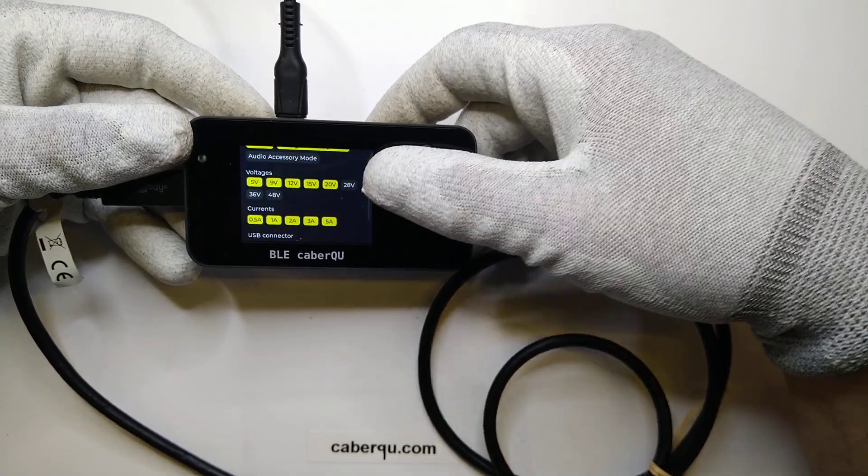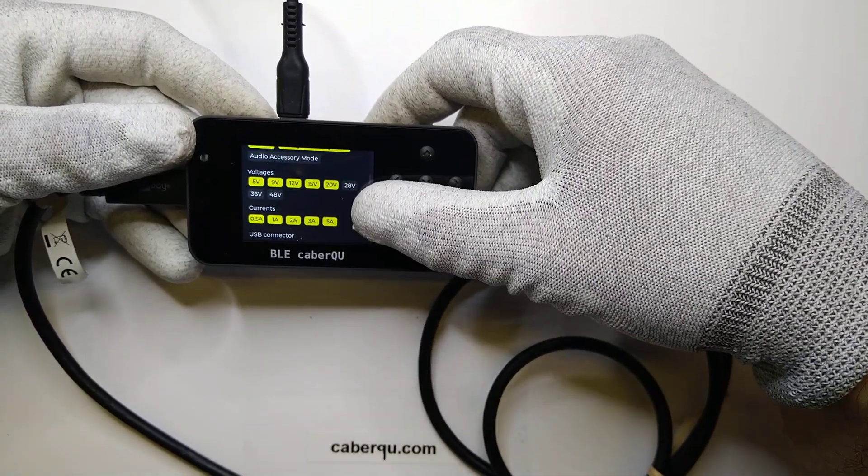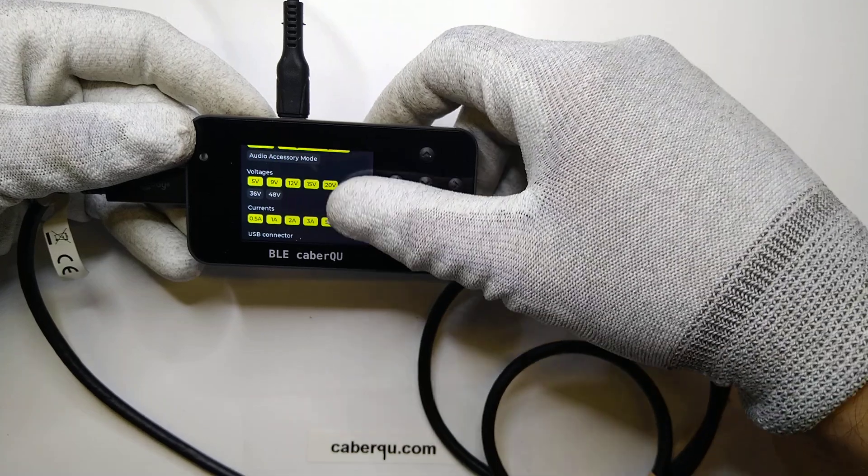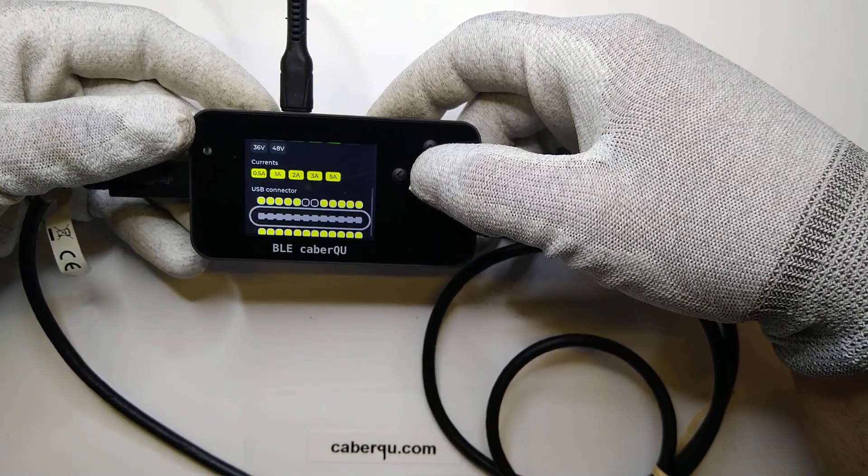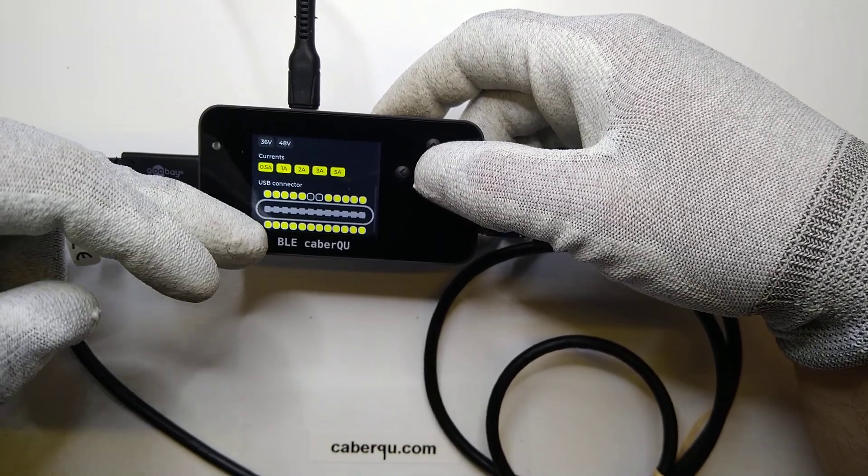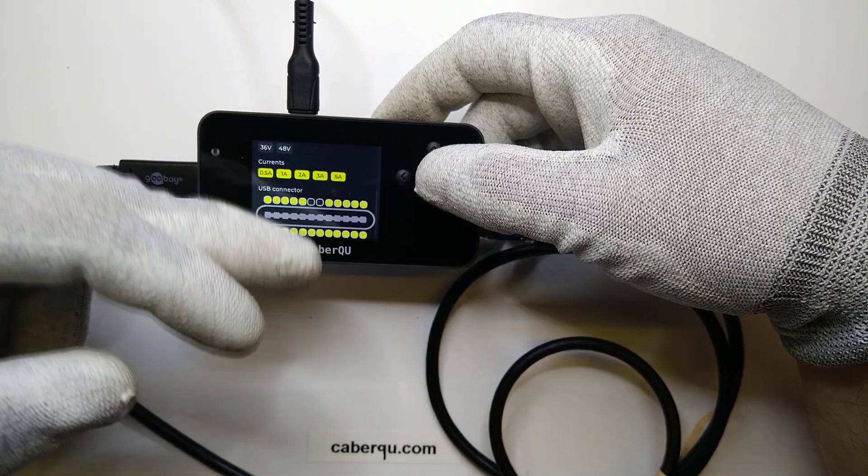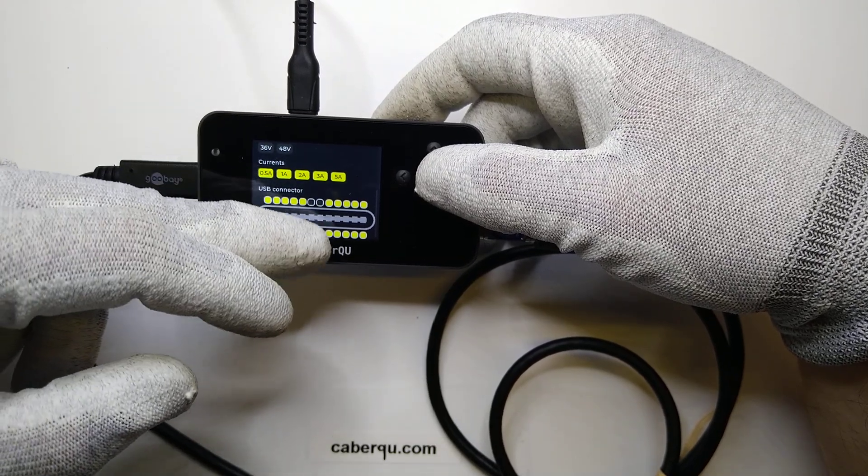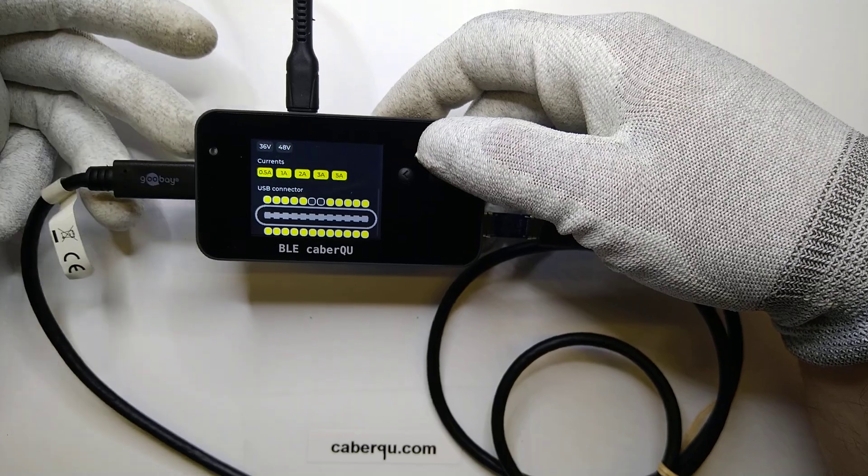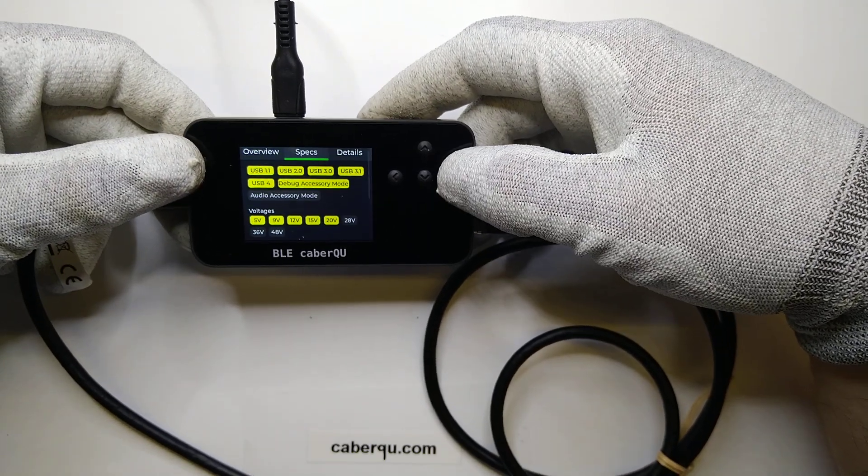And if we take a look, we can see that it advertised itself as a 20-volts, 5-amps cable, and basically all of the connections are made. The only two that are not made are the data plus and data minus on the top side. That's for backwards compatibility, as always, to be able to connect it to regular USB-A connections.